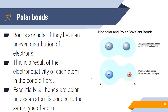Bonds are polar if they have an uneven distribution of electrons, which results from differences in electronegativity of each atom in the bond. Two carbon atoms bonded together have a nonpolar covalent bond because they have the same electronegativity and share electrons equally. However, between O and H, oxygen has a higher electronegativity, so electrons are shared unequally and will be closer to oxygen than to hydrogen. All bonds are essentially polar unless the atom is bonded to the same type of atom.